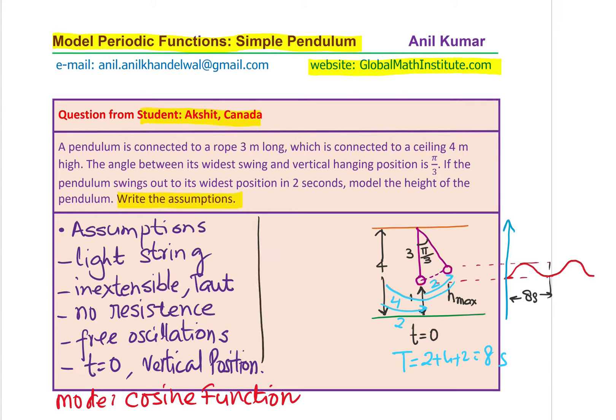And we know this one full cycle of this particular wave is 8 seconds. We found that time period T is 8 seconds and therefore, the value of k will be 2 pi by 8 or pi by 4.